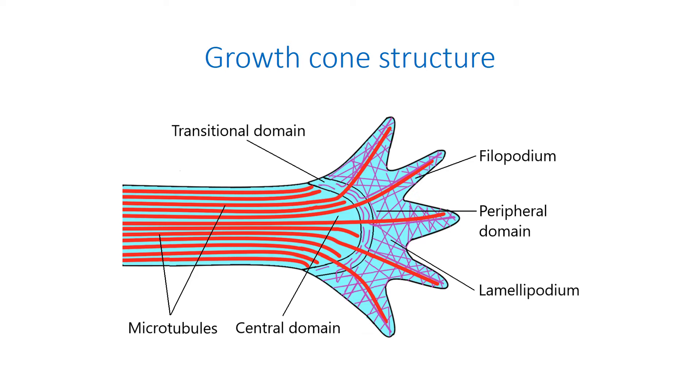The peripheral domain ends with several fine extensions termed filopodia or microspikes. They contain bundles of the F-actin filaments that are responsible for their shape and support. Filopodia can extend several micrometers beyond the leading edge of the growth cone. Their membrane contains receptors and cell adhesion molecules that are important for axon growth and guidance. Between the filopodia there are lamellipodia – flat regions of dense F-actin meshwork that have a veil-like appearance.